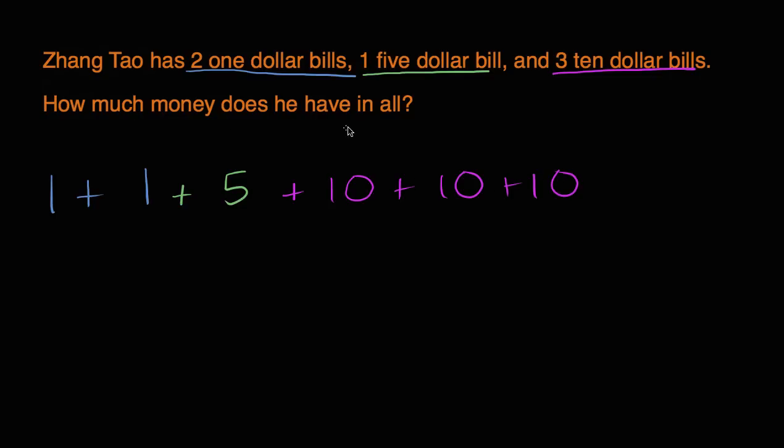How much money does he have in all? Well, let's see, one plus, let's see if we calculate it. One plus one is two. Two plus five is seven,